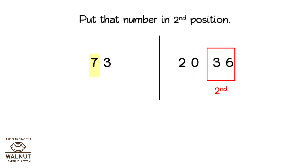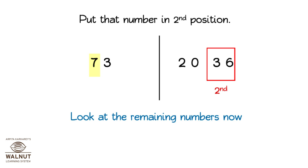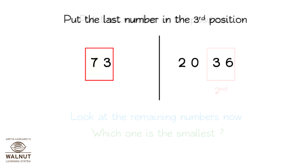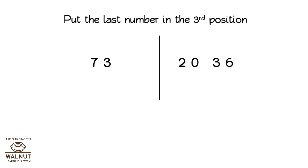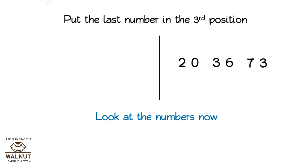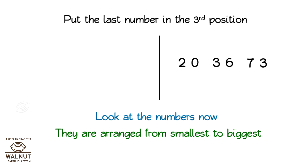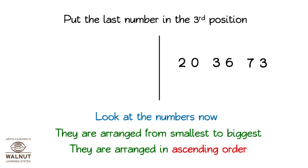Look at the remaining numbers now. Which one is the smallest? 73. Put the last number in the third position. Look at the numbers now. They are arranged from smallest to biggest. They are arranged in ascending order.